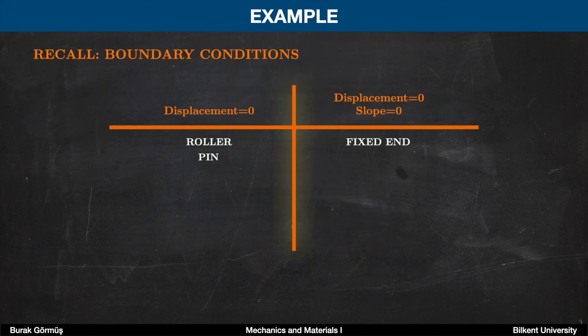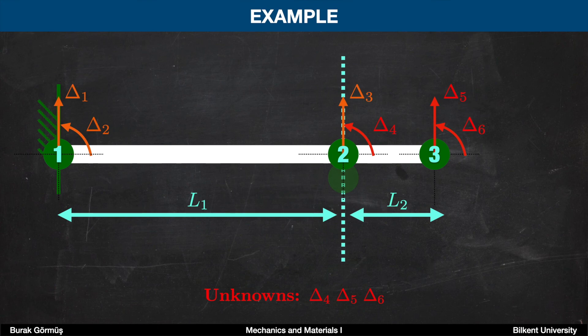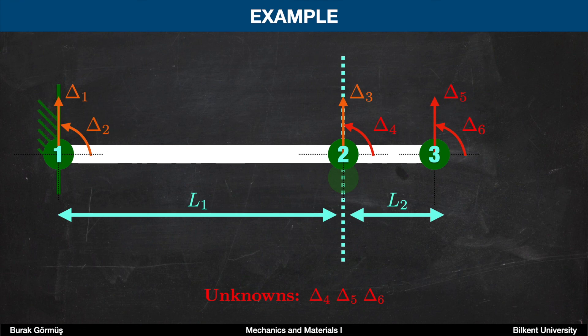We can have different boundary conditions for each node. For rollers and pins, the displacement is zero, while for a fixed end, both displacement and slope values are zero. Therefore, in this example, the unknowns are related to axes four, five, and six — the slope at node two and the slope and displacement values at node three. For node one, we know both slope and displacement. For node two, we know the displacement but not the slope. For node three, we know neither. In total we have three unknowns. Using the finite element method, we can find these unknowns and find the reactions at nodes where displacement boundary conditions are already known.